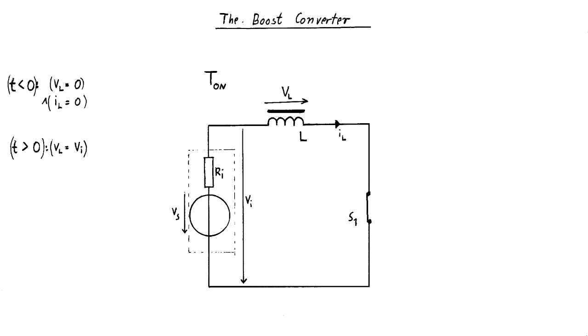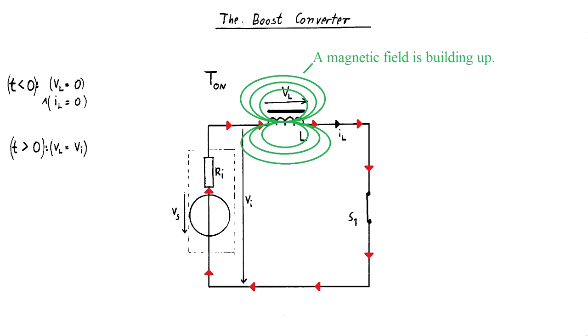But inductors always resist the change of current through them. For T equals zero, being directly in the moment where the switch is closed, the current is still zero and only after a while starts to rise. As the current rises, a likewise rising magnetic field is created by the inductor in which magnetic energy is stored.